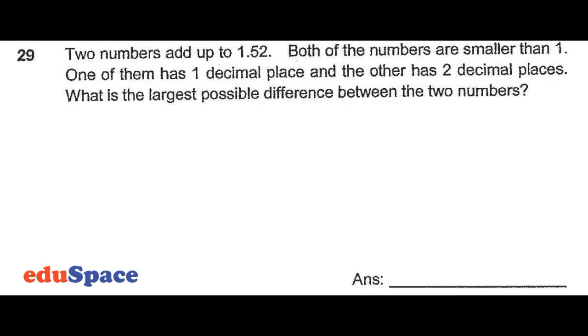The question is talking about two numbers that add up to 1.52, and both numbers are smaller than one. One of them has one decimal place and the other has two decimal places.